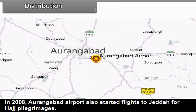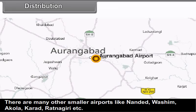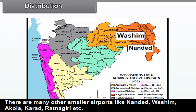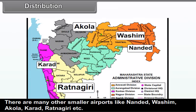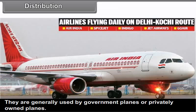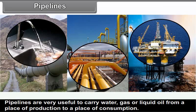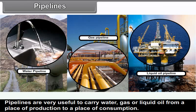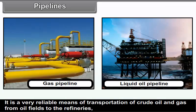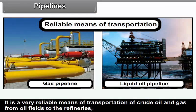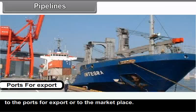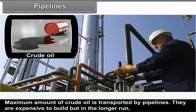Juhu Aerodrome was India's first airport and is now used as a flying club; it also has a helipad. There are four international airports in Maharashtra. Mumbai's Chhatrapati Shivaji International Airport is one of India's busiest airports. The other international airports are at Pune and Nagpur. In 2008, Aurangabad Airport also started flights to Jeddah for Hajj pilgrims. There are many other smaller airports like Nanded, Washim, Akola, Karad, Ratnagiri, etc., generally used by government or privately owned planes.